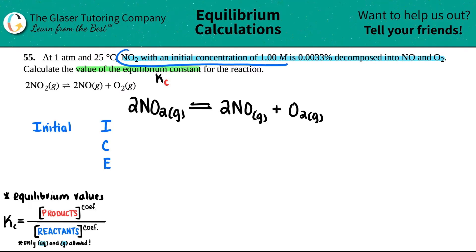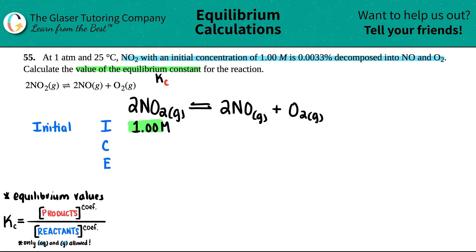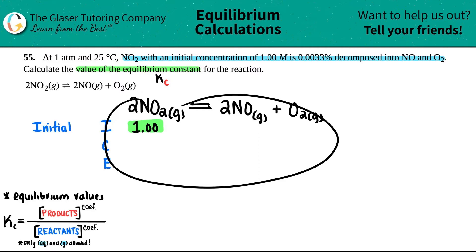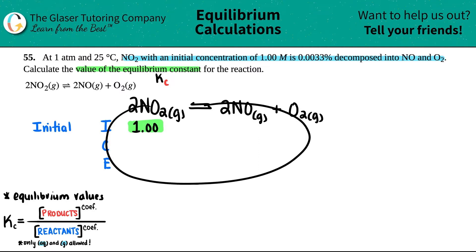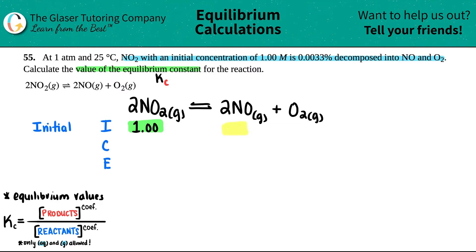They said NO₂ had an initial concentration of 1.00 M, so I plug 1.00 into the Initial row for NO₂. I won't include units in the table to keep things clean — since we're using Kc, molarity is the required unit and we already confirmed we have it. Now let's finish the initial column for NO and O₂.